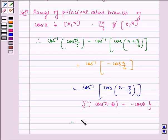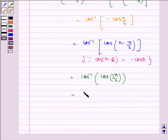Which is equal to cos inverse of cos of 5π by 6, which is equal to 5π by 6, because 5π by 6 belongs to 0 comma π.